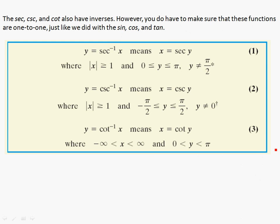Okay, here's the new part — this table. The same logic we applied previously applies also to secants, cosecants, and cotangents. You can just run through what these things relate to. The secant relates to the cosine. So when was the cosine one-to-one? From 0 to π. That means the secant will also be one-to-one from 0 to π.